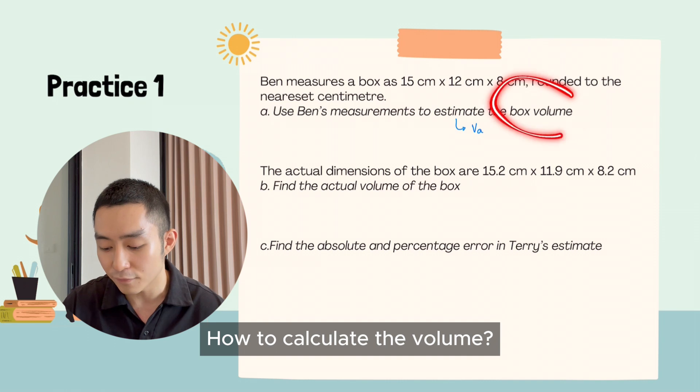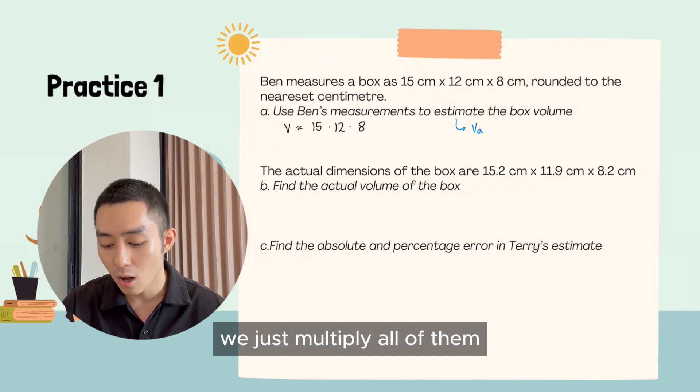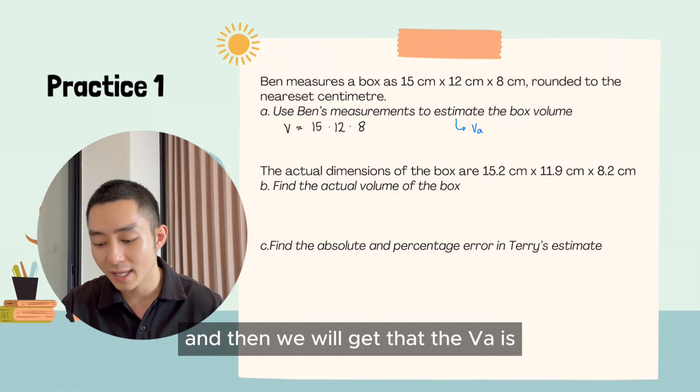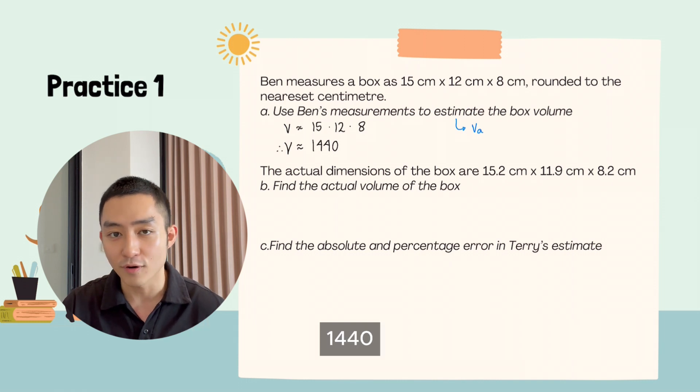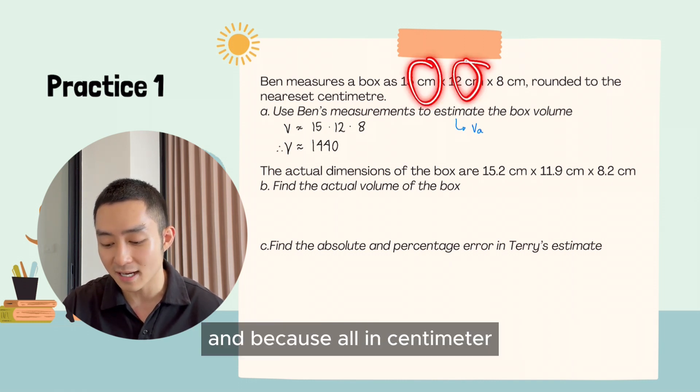And how to calculate the volume, we just multiply all of them. And then we will get that the VA is 1440. And because all in centimeter,